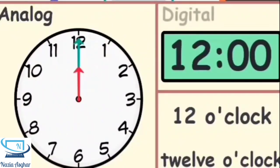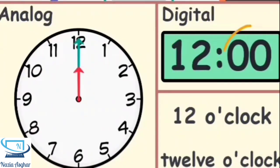This is called a digital clock. The digits on the left will tell us the hour that we're in. The digits on the right tell us how many minutes have passed the hour. The time on both the analog clock and the digital clock both say 12 o'clock.